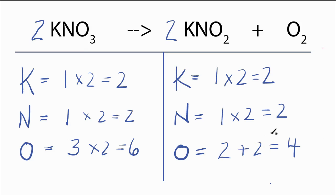And now we need to recalculate how many oxygens we have since we added this coefficient in front of the potassium nitrite. We have two times two, that's four, plus these two here, that's two, and that gives us six.